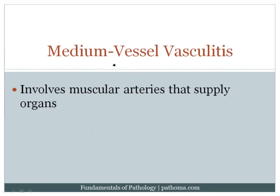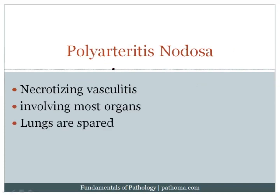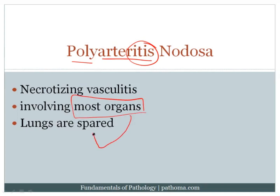The medium vessel vasculitides involve muscular arteries — the ones that supply organs such as the renal artery. The first is called polyarteritis nodosa. Polyarteritis means multiple arteries with inflammation. This is a necrotizing vasculitis that involves most organs. One important thing to note: the lung is spared. So you can get signs and symptoms in any organ except the lung.